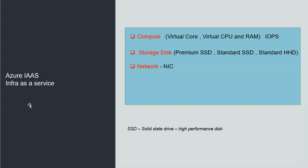In Azure, infrastructure as a service is a combination of three things: compute, storage, and network. Compute means virtual CPU and virtual RAM, which are virtualized through the portal. For storage, there are three types: premium SSD, standard SSD, and standard HDD, which is the older version. The latest high-performance options are premium SSD and standard SSD.